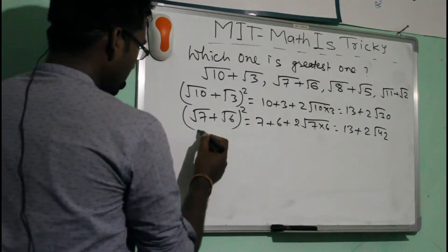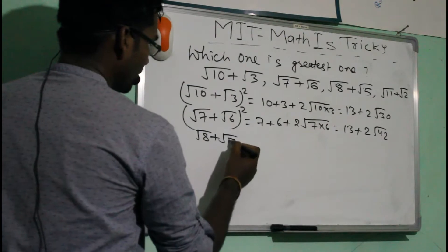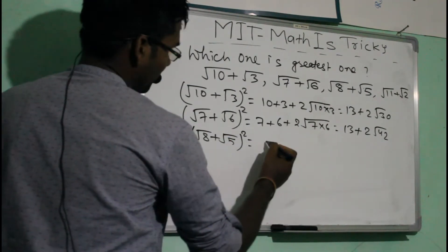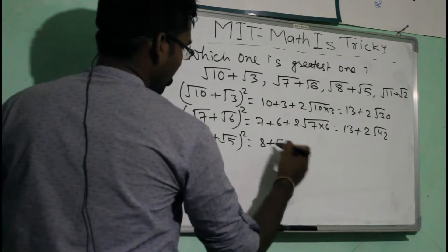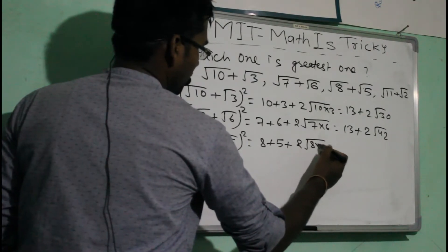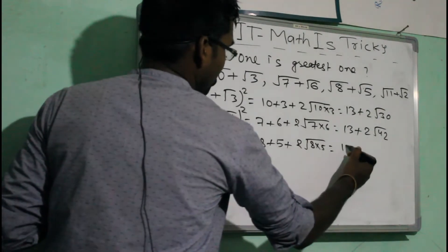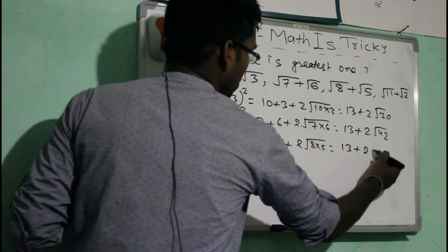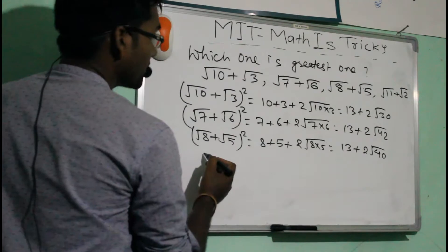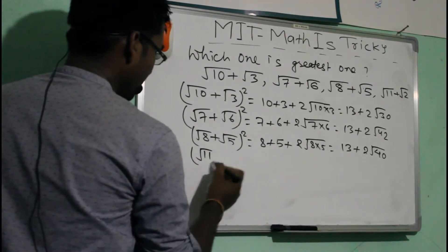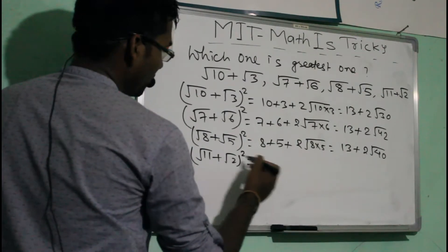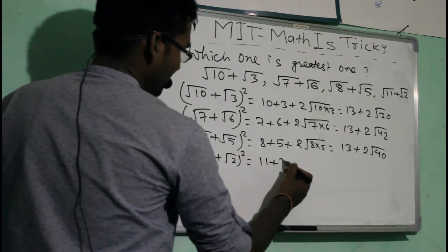The third expression, (√8 + √5)², gives 8 + 5 + 2×√8×√5, which is 13 + 2√40. The last one, (√11 + √2)², gives 11 + 2 plus 2×√11×√2, which is 13 + 2√22.